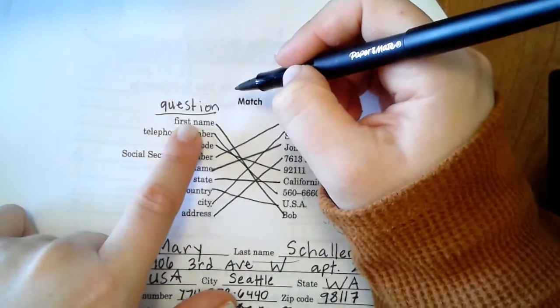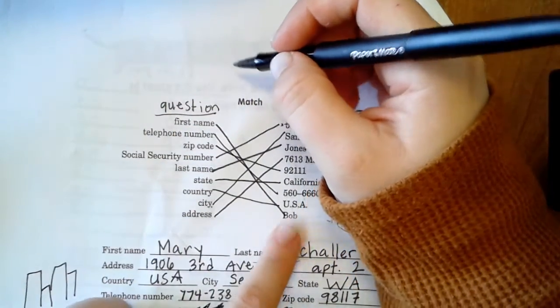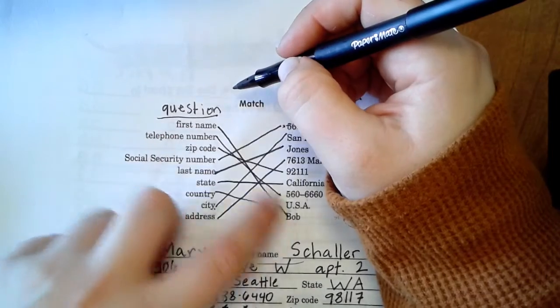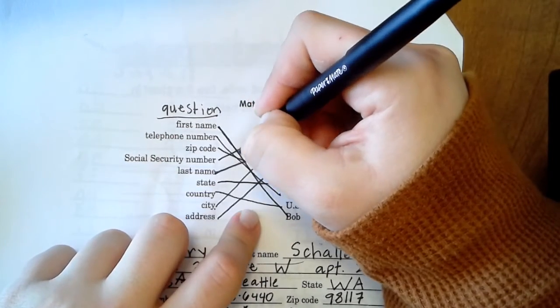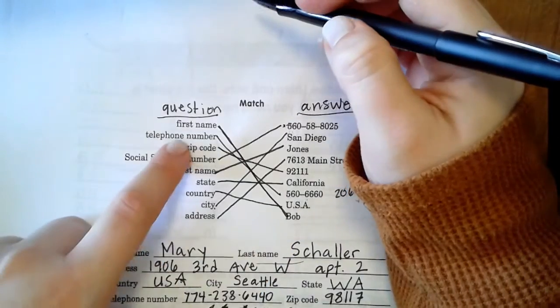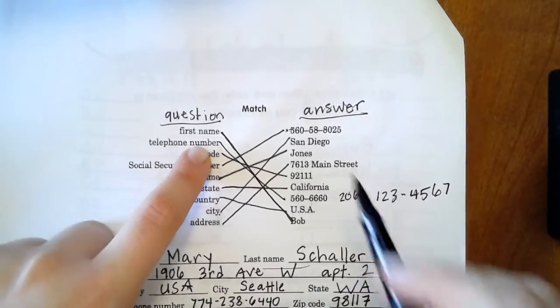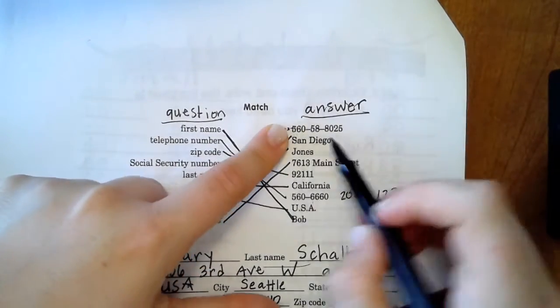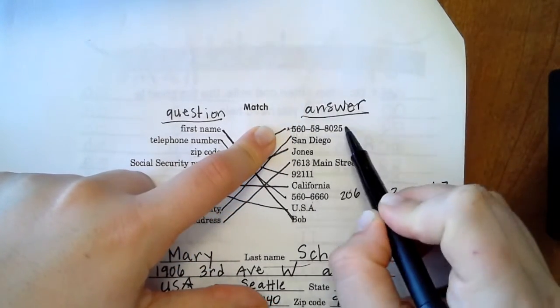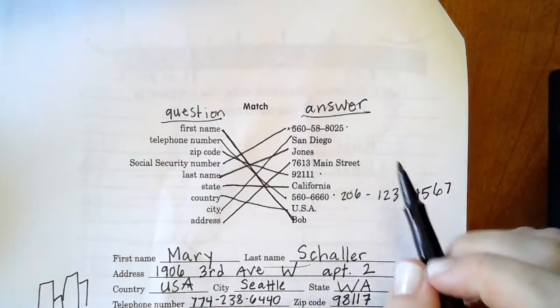So here we match the question and the answer. For example, the first one, his first name. Remember weeks ago we talked about Bob Jones, so his first name is Bob. So you draw the line between first name and Bob. Next, telephone number. We have actually three numbers here. Which one is telephone?